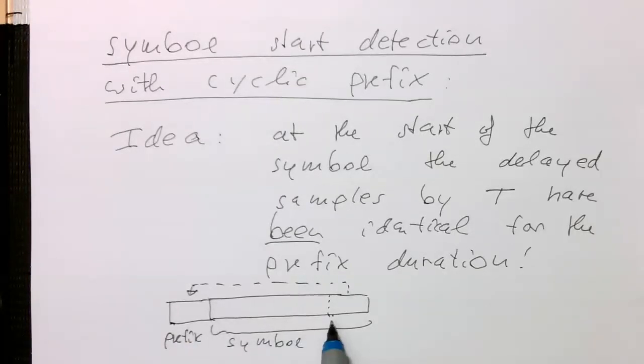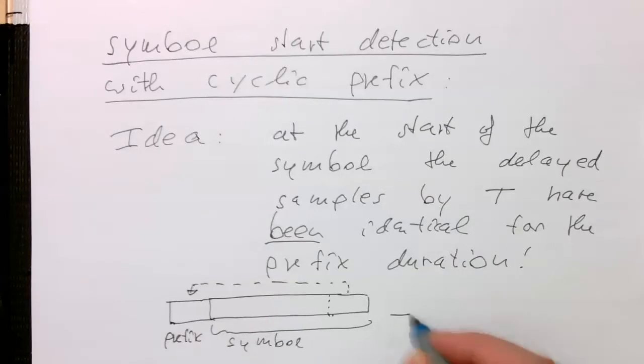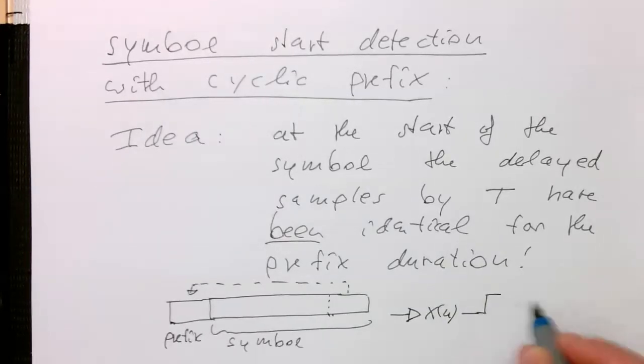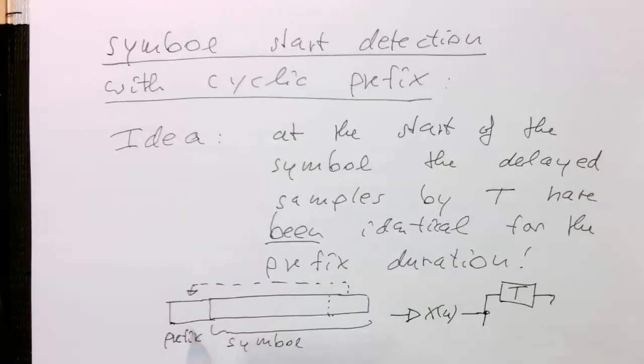Mathematically, this is obviously very easy to do. What we do is, if this is our data stream here, let's call this here x of n. So what we just need to do is, we need to delay that by our symbol duration. And then, at the end, we know that we are getting loads of identical samples.